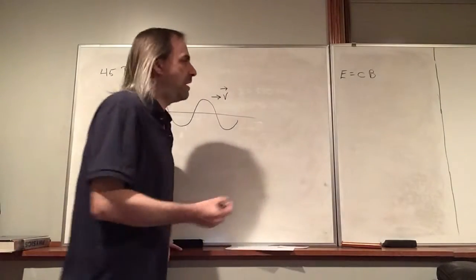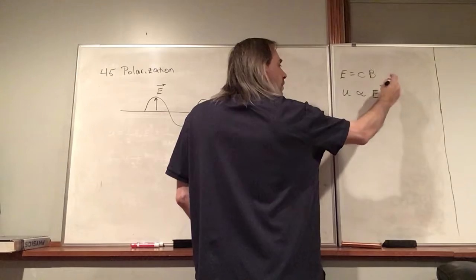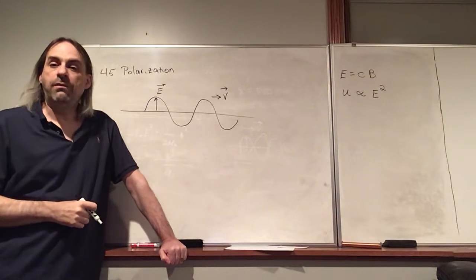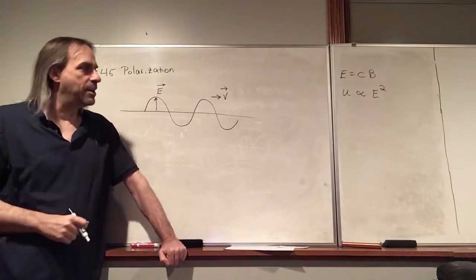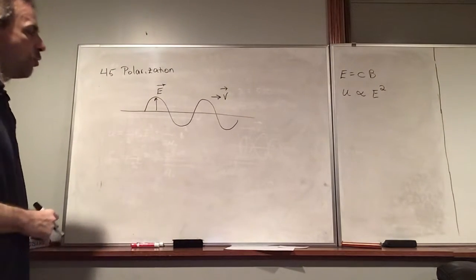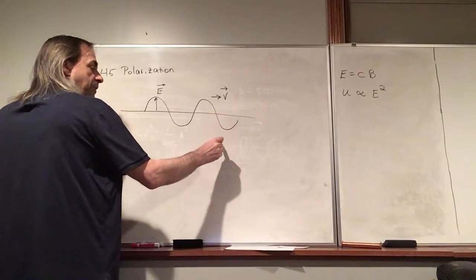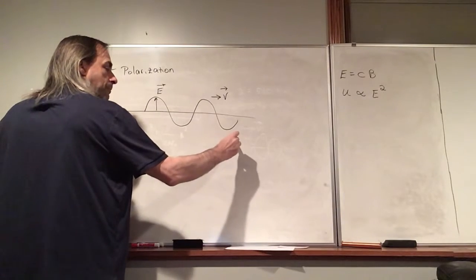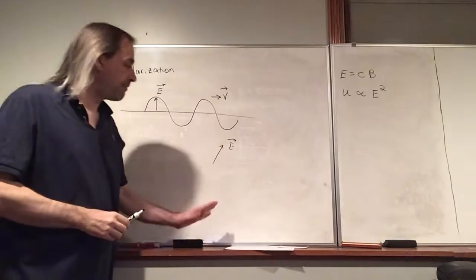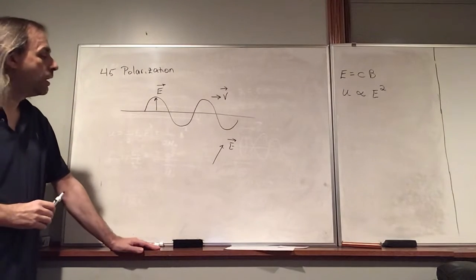Waves carry energy, and the energy density is proportional to the electric field squared — that's going to come into play. We can describe this wave as having an orientation. If you look at a wave coming towards you, you can look at the electric field — it points in some particular direction. The electric field oscillates in one particular direction.